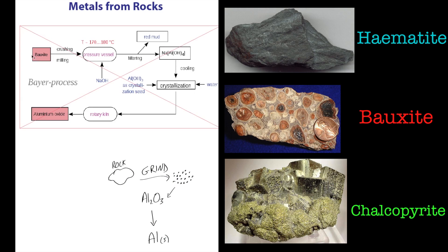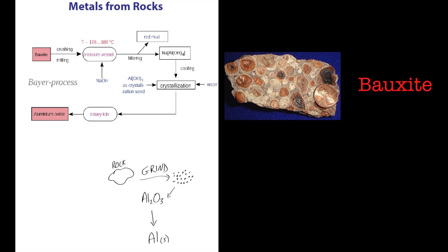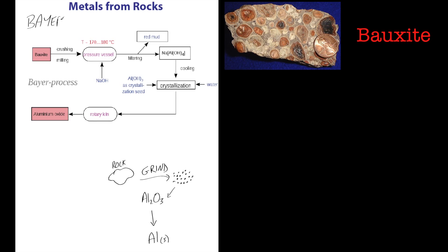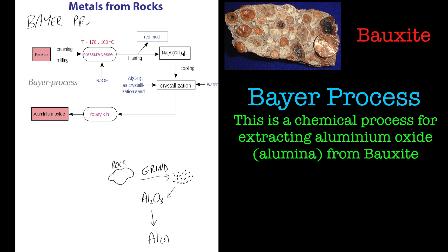So basically, we'll take bauxite rock - this is called the Bayer process. We'll crush it up, grinding it down into a nice powder, and then they add sodium hydroxide.